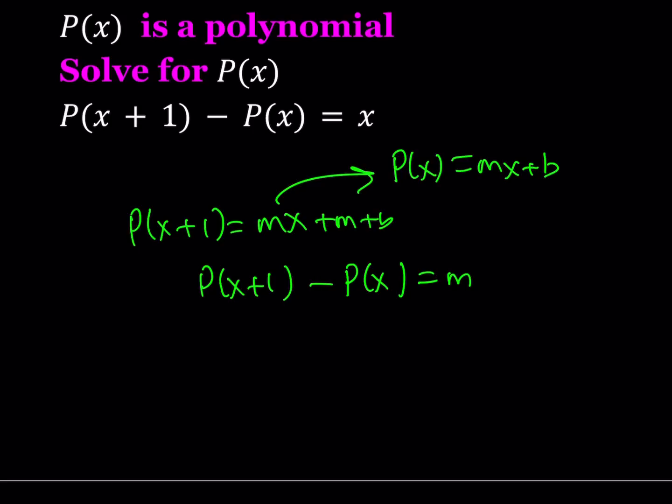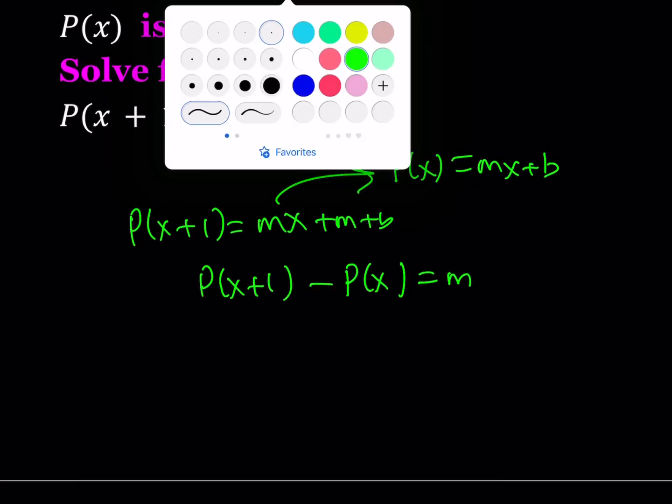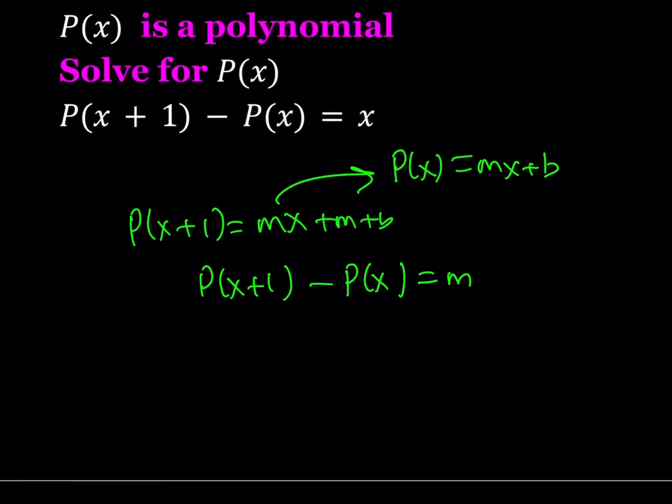But if you think about this, since the differences are linear, then that means the second differences are constant. That tells us something. And it means that P of X must be a quadratic function. Why? Because for a quadratic function, the second differences are constant.